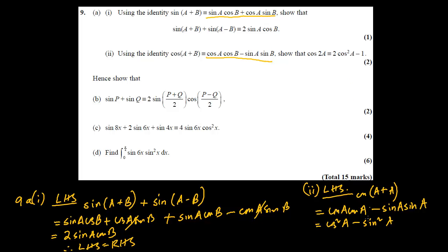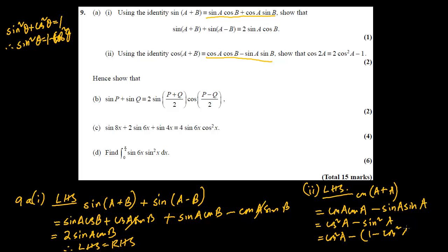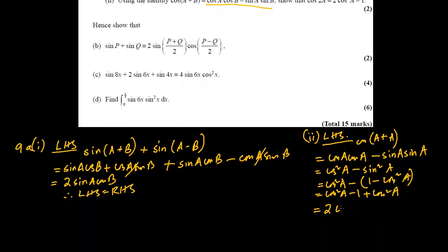To prove the required form, we need only cos squared, so sine squared must be converted. Using the identity sin²θ + cos²θ ≡ 1, we get sin²θ = 1 − cos²θ. Substituting: cos²A minus (1 − cos²A) = cos²A − 1 + cos²A = 2cos²A − 1. Therefore left hand side equals right hand side — proved.